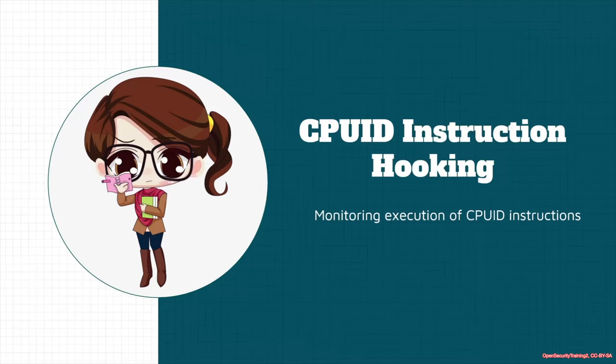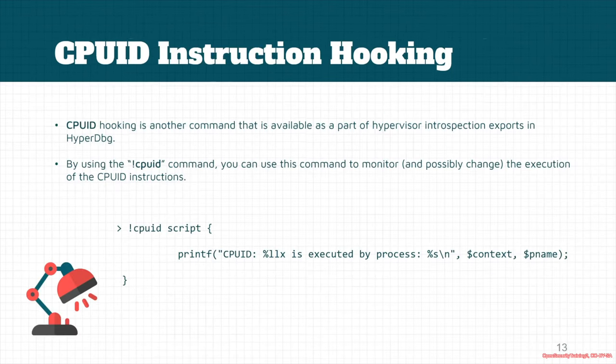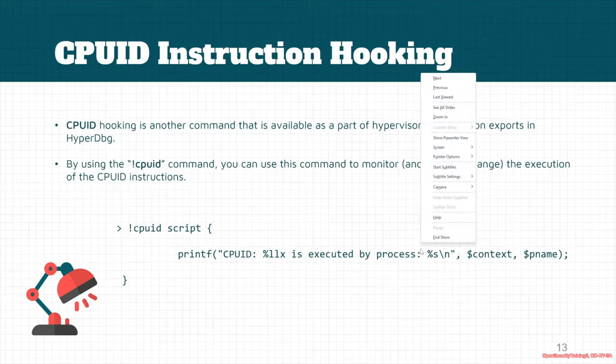Let's see how we can hook CPUID instructions. Like all other events, CPUID hooking is another event and is available as part of hypervisor introspection exports. In HyperDbg, we can use the 'bang cpuid' or '!cpuid' command for this purpose, and it tries to monitor all of the CPUID instructions that are executed in Windows.